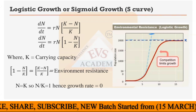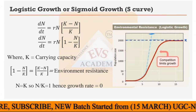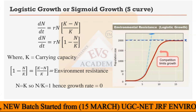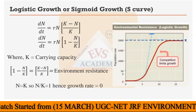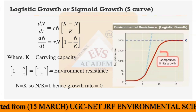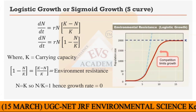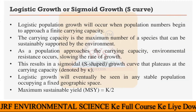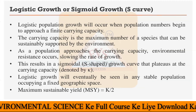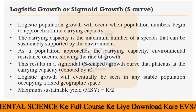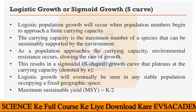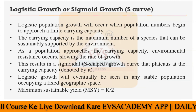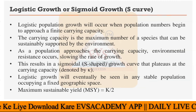In the J-curve there is no such limit — the population can go as high as possible. But in the sigmoid curve there is a limit on the population number. The carrying capacity is the maximum number of species that can be sustainably supported by the environment at a particular time.